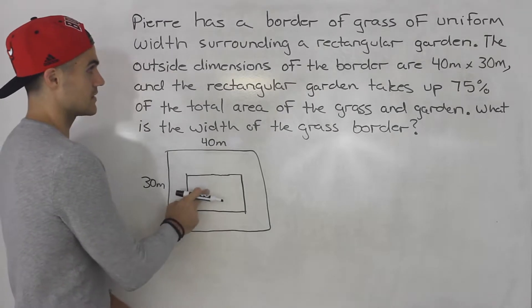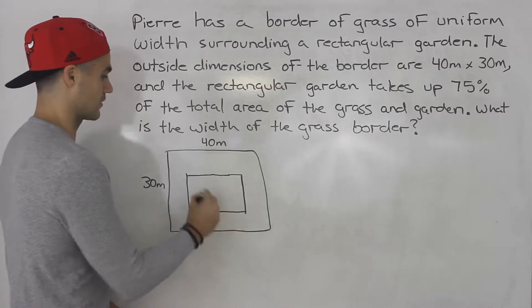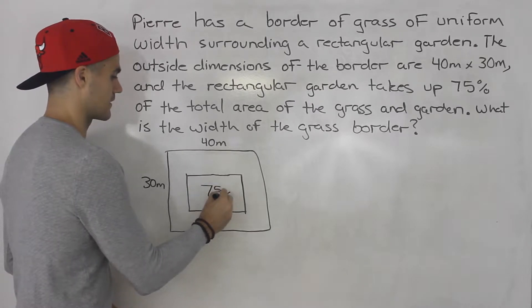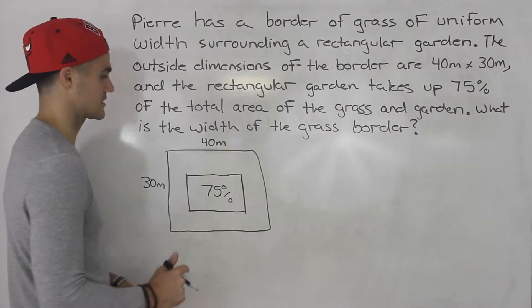And the rectangular garden takes up 75% of the total area of the grass and the garden. So this here is 75% of the total area. It doesn't look like it in the diagram, it's not to scale.